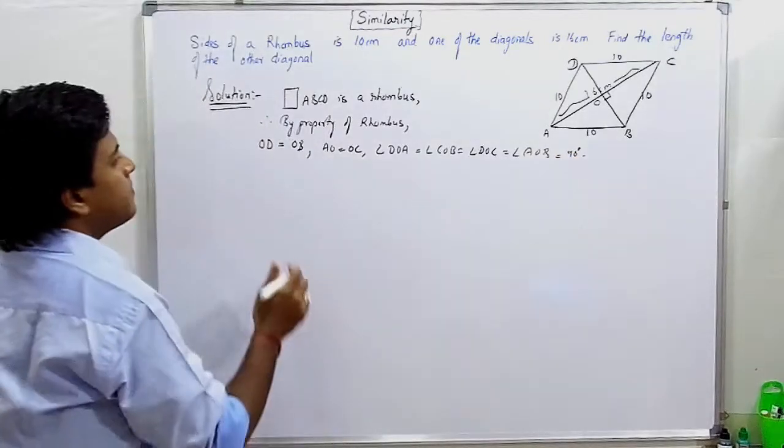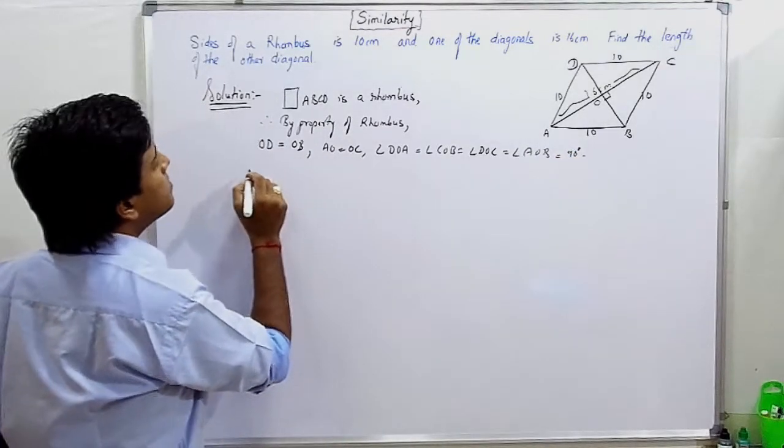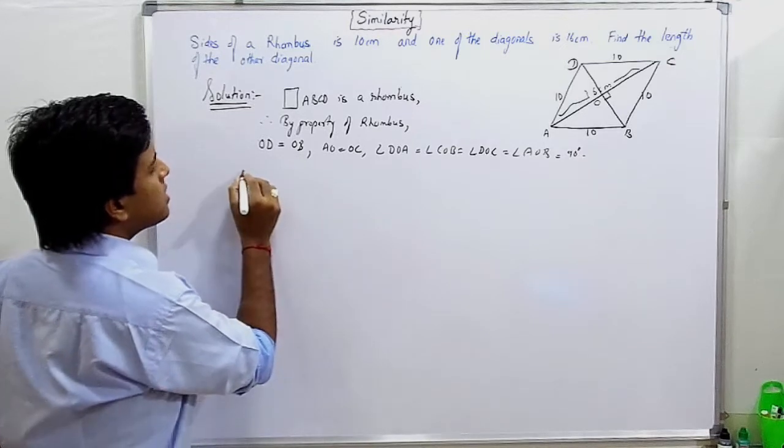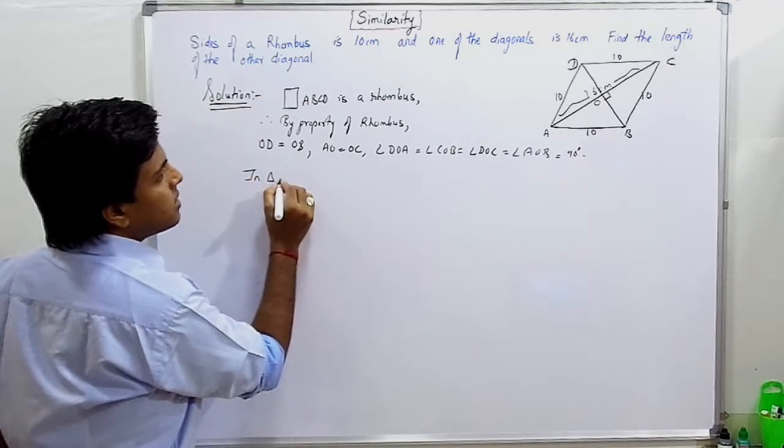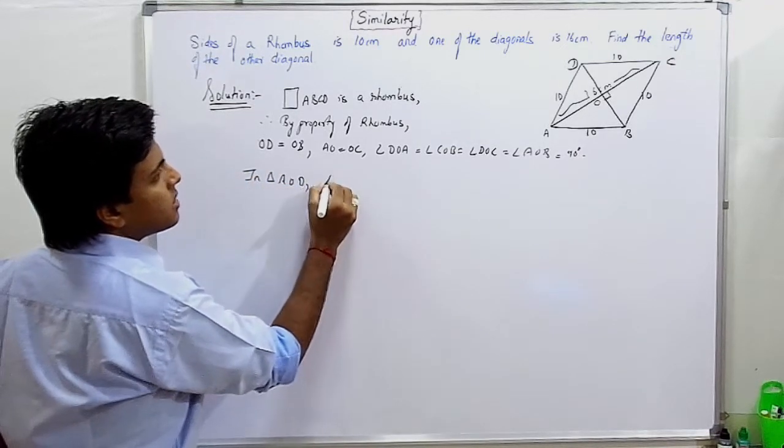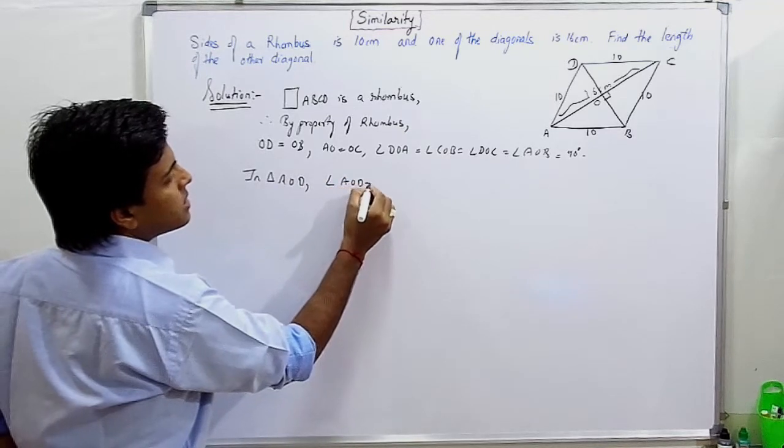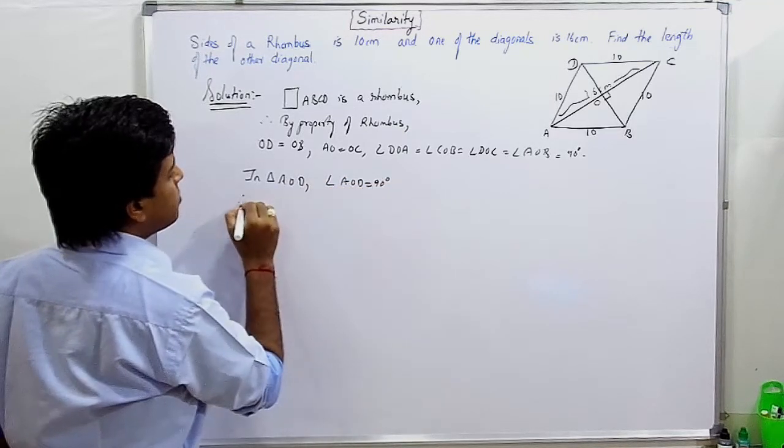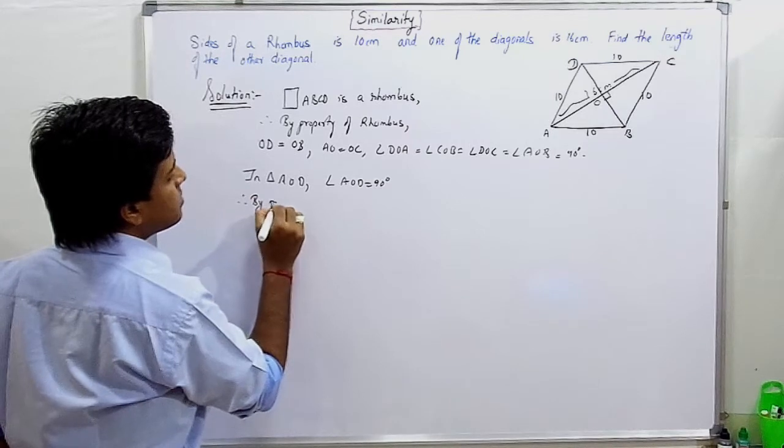And in this case we will do what? We will work in triangle AOD. Angle AOD is 90 degrees, therefore by property of rhombus.